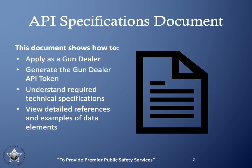In today's presentation, we will provide crucial information to get you started with using the gun dealer API. We have documented everything covered today within the API specifications document, which will be made available to gun dealers by OSP. This document covers how to apply as a gun dealer in the FIX portal, generating the gun dealer API token, common practices for using the gun dealer API, understanding the required technical specifications, and viewing detailed references and examples of required data elements.